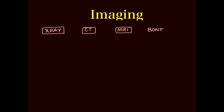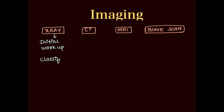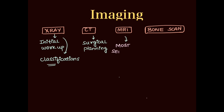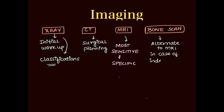Coming to imaging, we will discuss X-ray, CT, MRI, and bone scan. X-ray is the initial modality of choice and helps in classification along with MRI and clinical findings. CT is used for surgical planning. MRI is the most sensitive and specific modality and the investigation of choice. Bone scan is an alternate when MRI shows indeterminate findings.